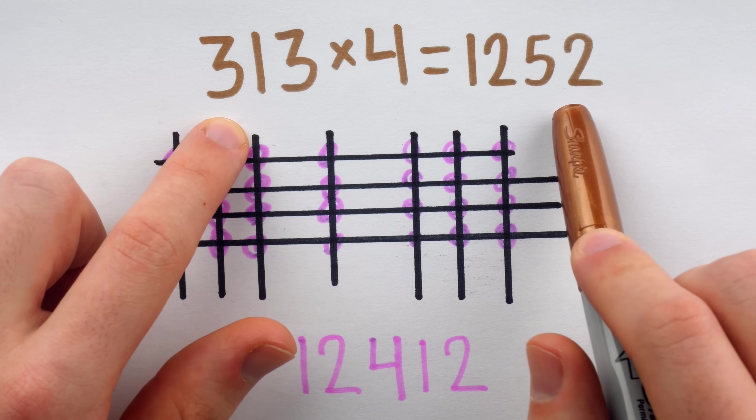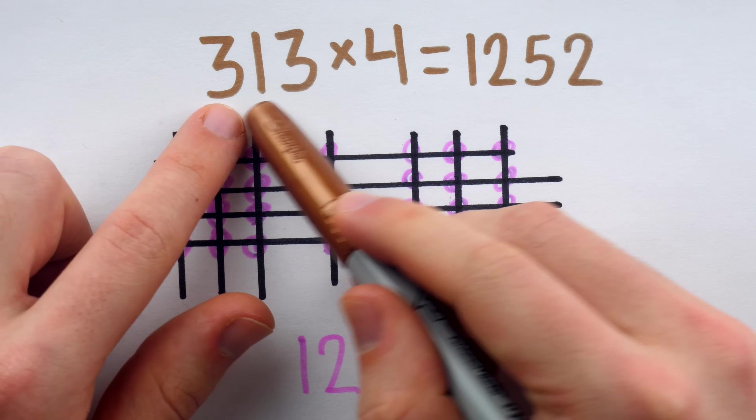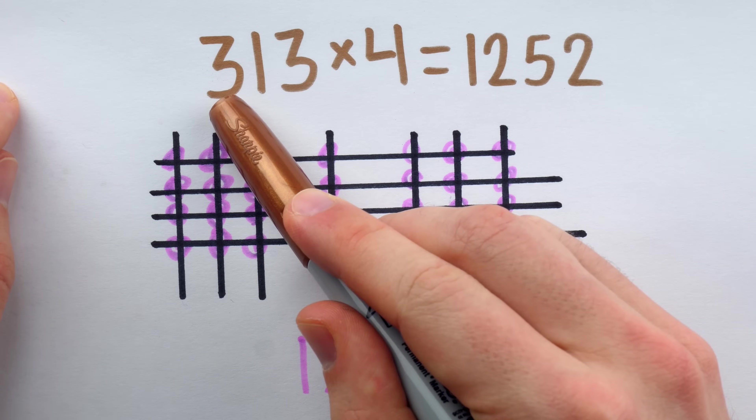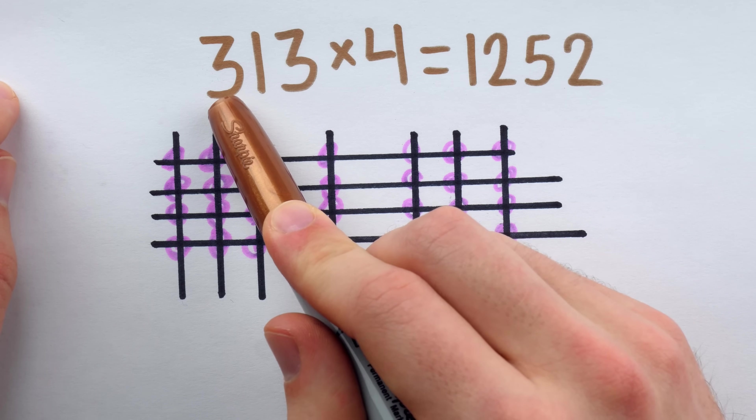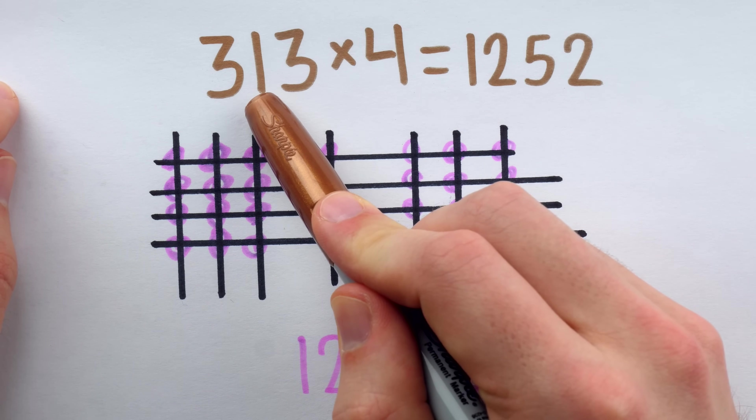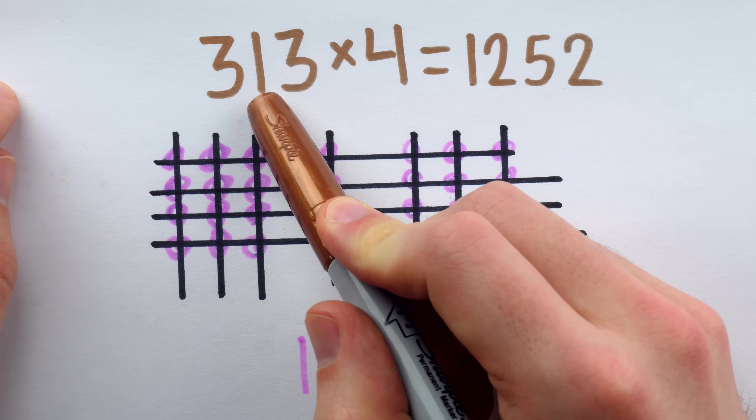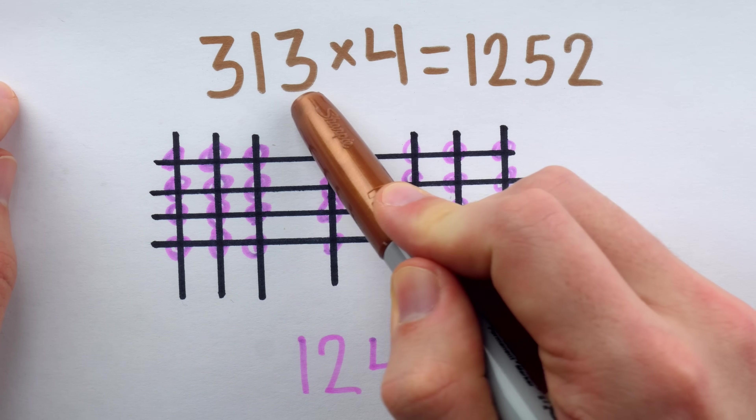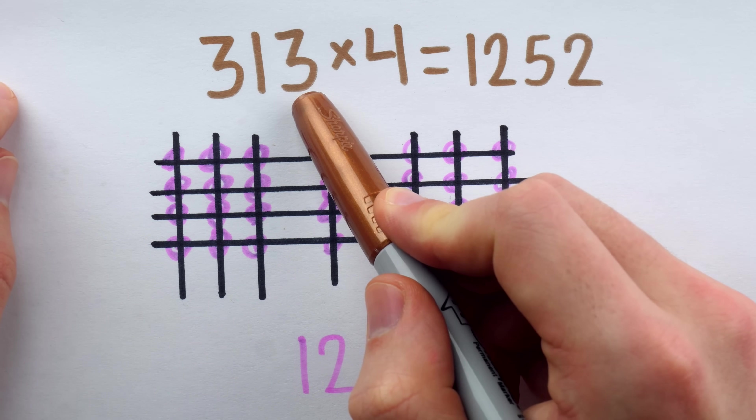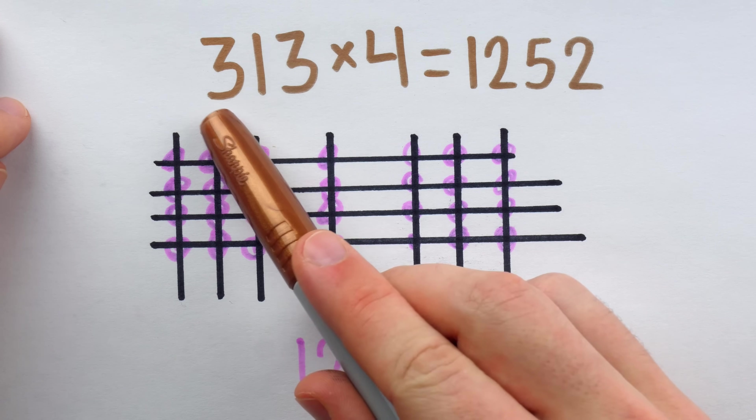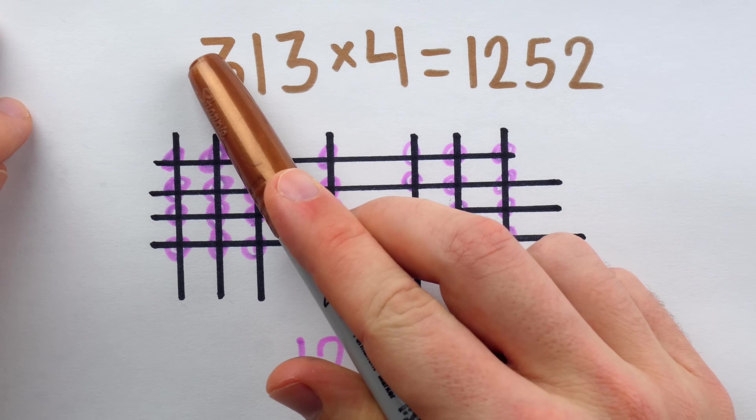Which can be done accurately and quickly in your head by just splitting up the problem. 4 times 300 is 1,200, 4 times 10, that's 40, so 1,240, and 4 times 3 is 12, so 1,252. Split the number up, multiply, add the pieces together.